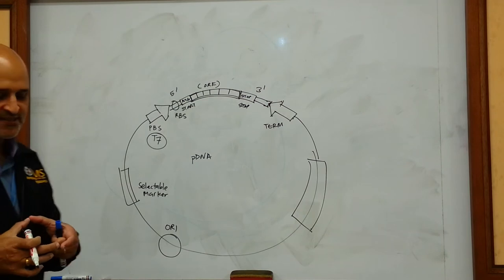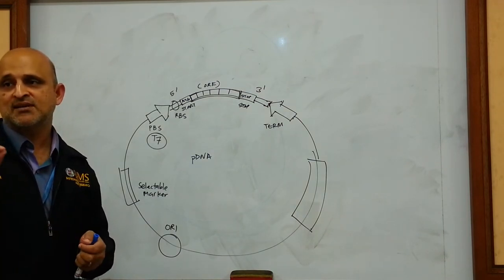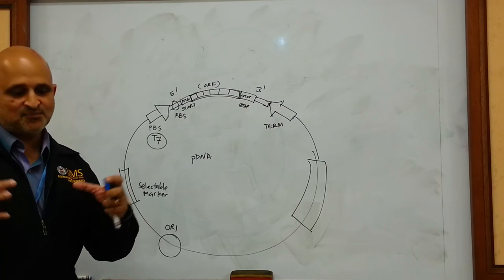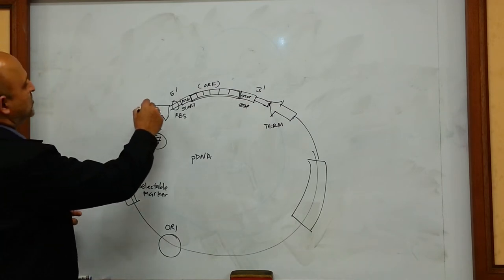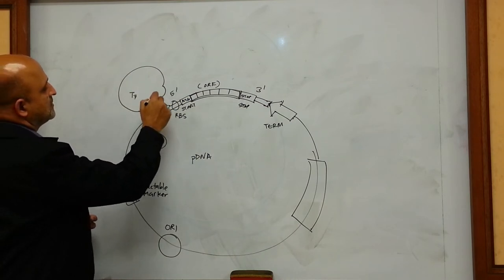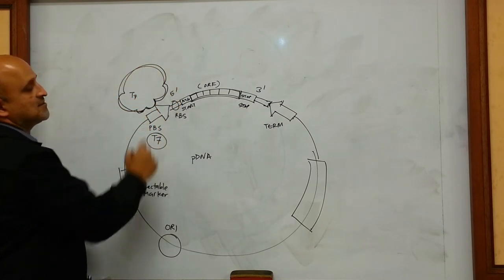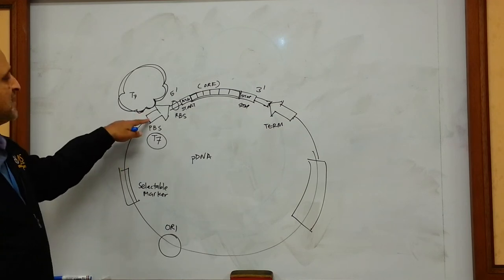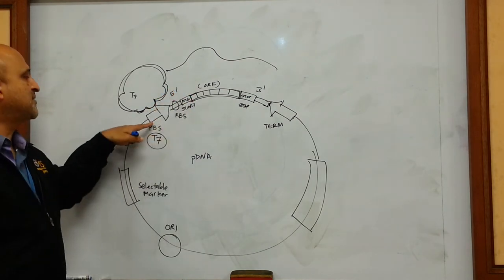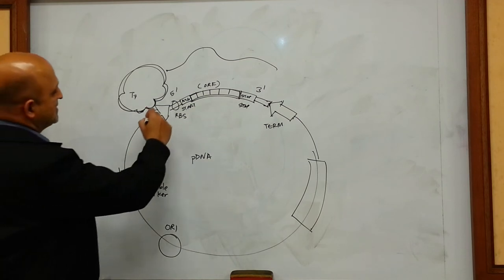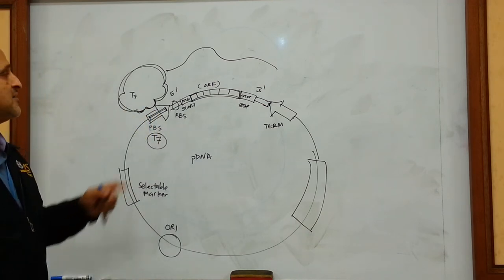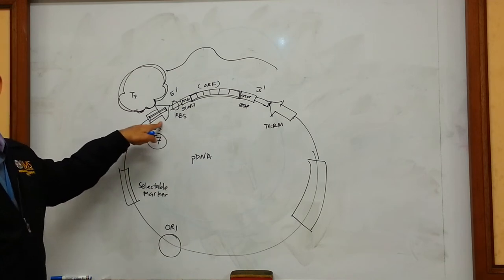A promoter binding site is a region of DNA which encodes a specific sequence that does not get translated into protein. However, the promoter itself is a protein. For example, with a T7 promoter, the T7 RNA polymerase — which is a protein — will bind to the promoter binding site and initiate transcription of the RNA. This promoter binding site is specific for that specific promoter: the T7 RNA polymerase requires a T7 promoter binding site, such as when using E. coli BL21.